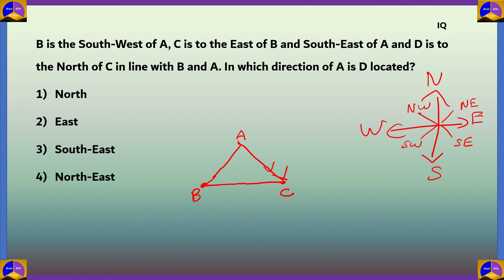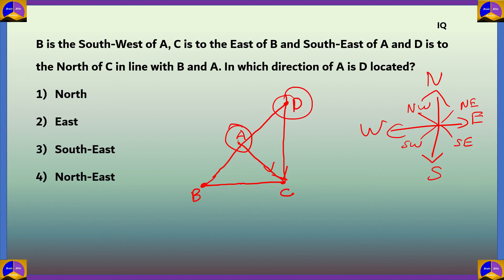The next statement says D is to the north of C, in line with B and A. Drawing a line through B and A and another line going north from C, D is located where they intersect. With respect to A, D is positioned to the top-right, which is the northeast direction. So option 4, northeast, is the correct answer.